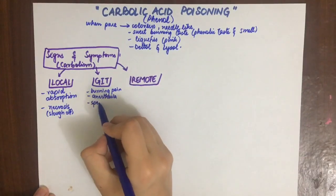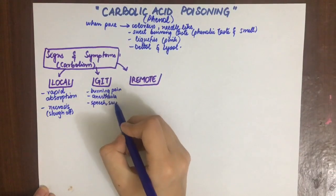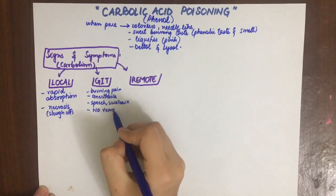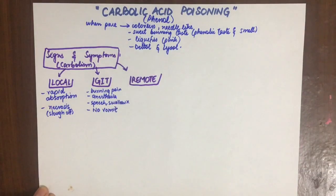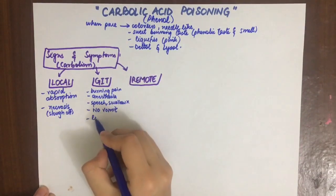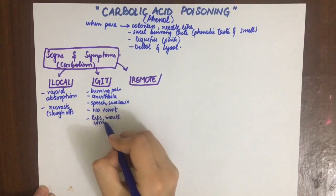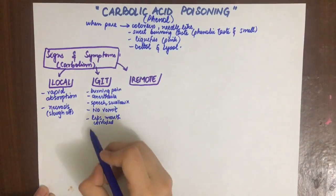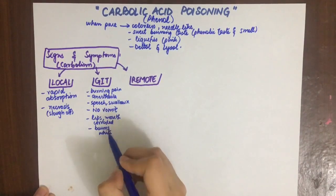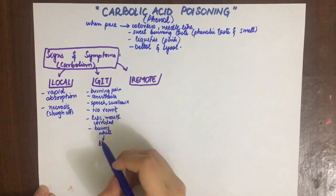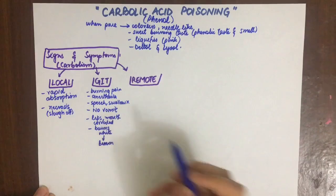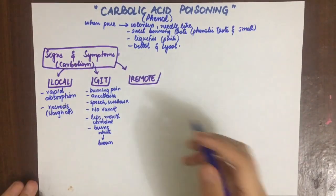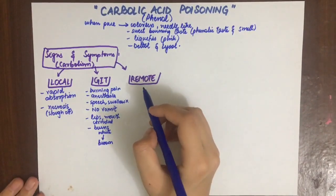In the GIT, carbolic acid causes burning pain, anesthesia, and difficulty with speech and swallowing. There is no vomiting due to the anesthetic action of carbolic acid. The lips and mouth are corroded and the burns are white, which then later on turn brown due to the sloughing off of tissues.